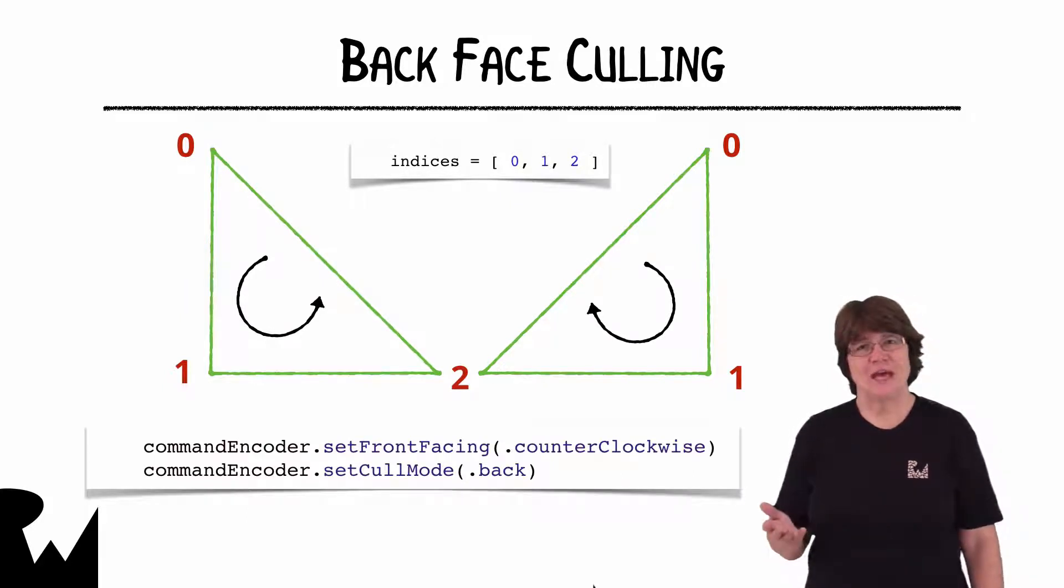The standard winding order for 3D OBJ format models is counterclockwise. But the default in metal is clockwise. So when we set backface culling on, we almost always have to explicitly specify the winding order as counterclockwise. Otherwise we'll get strange artifacts.